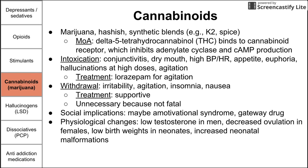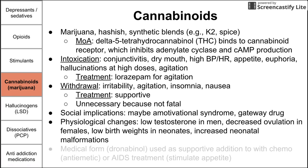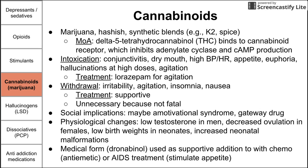Physiologic changes you definitely do see with chronic cannabinoid use are lower testosterone in men, decreased ovulation in females, lower birth weights, and increased neonatal malformations. The medical form of cannabinoids, dronabinol, is used as a supportive medication alongside chemotherapy to prevent vomiting, and in AIDS patients to stimulate appetite.